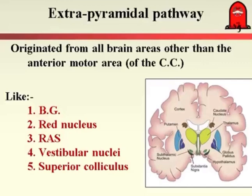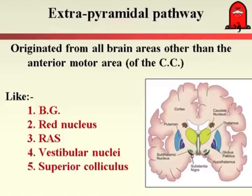There are different pathways responsible for motor activity. We mentioned the pyramidal system, and now we will talk about the extrapyramidal pathway. The extrapyramidal — from its name, 'outside the pyramidal system' — means all the motor fibers which descend downward from the brain to the spinal cord originating away from the cerebral cortex. The extrapyramidal tract includes fibers starting from basal ganglia, red nucleus, reticular activating system, vestibular nucleus, superior colliculus — in other words, outside the cerebral cortex. These are called the extrapyramidal pathway.